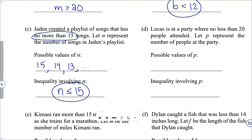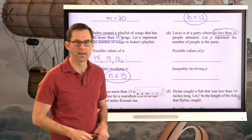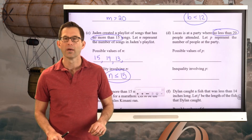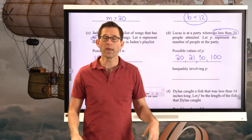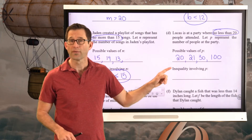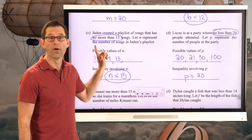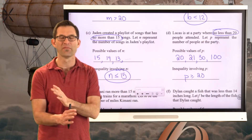Letter D: Lucas is at a party where no less than 20 people attended. Let P represent the number of people. You couldn't have less than 20 — you can't have 18 or 5 people — but you could have 20, 21, 30, or 100 people. This phrase means we can't have less than 20. So even though the phrase contains 'less than,' our inequality is P is greater than or equal to 20. Note: 'no more than' gives less than or equal to, while 'no less than' gives greater than or equal to — it's that word 'no' that flip-flops the inequality.